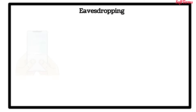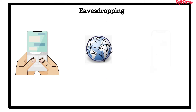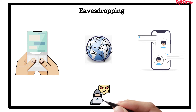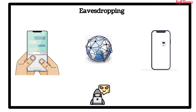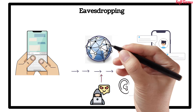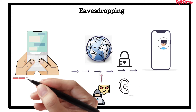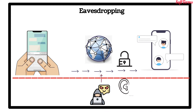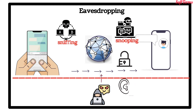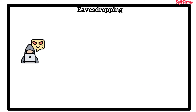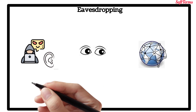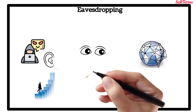Eavesdropping: In general, the majority of network communication occurs in an unsecured or clear text format, which allows an attacker who has gained access to the data paths in the network to listen in or interrupt the traffic. When an attacker is eavesdropping on the communication, it is referred to as sniffing or snooping. The ability to eavesdrop and monitor the network is generally the biggest security problem that faces an individual.